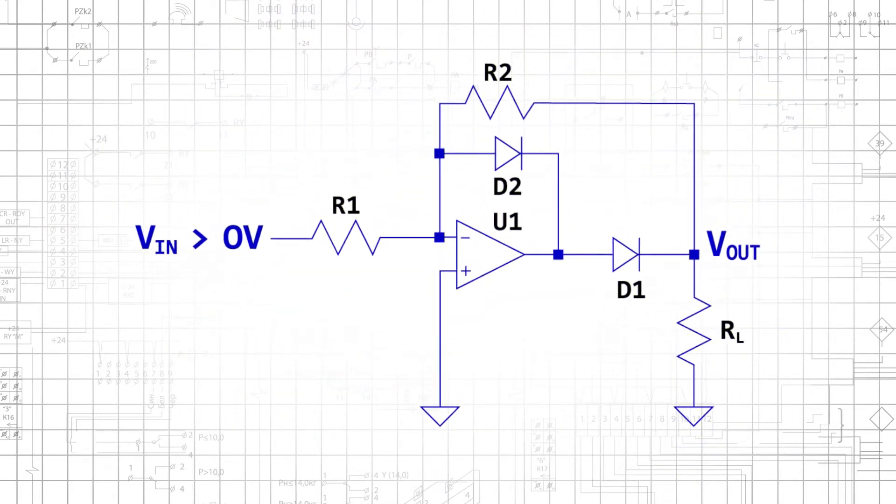Output saturation is prevented with a simple modification. Notice that we now connect the input signal to the op amp's inverting input terminal. When the input signal is above zero volts, D1 is an open circuit and D2 conducts. A negative feedback path is established preventing saturation, and the virtual short is active, but the output node is disconnected from the op amp's output terminal.